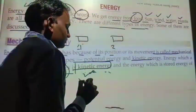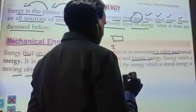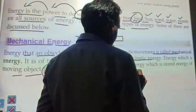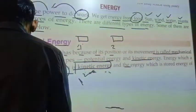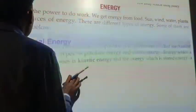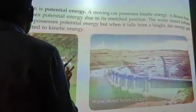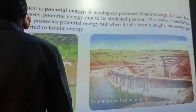The second type is potential energy — the energy which is stored energy, the energy of its position.